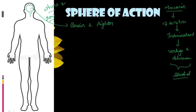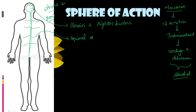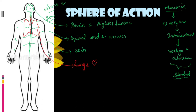Following the brain, Agaricus acts on the spinal cord and spinal nerves, making it influential over the central nervous system and peripheral nervous system. Then it has influential action over the skin producing chilblain-like symptoms, then the lungs, then the GIT, and finally a prominent action over the lumbar vertebra.